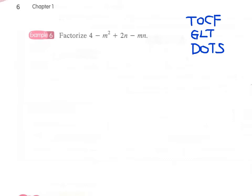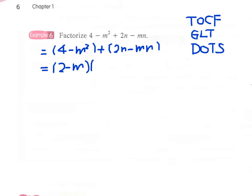In this question we can see that 4 minus m squared is a form of difference of two squares, and in 2n minus mn we can find a common factor of n. So we separate the four terms into two groups: the first two terms in one group and the third and fourth terms in the second group. In the first group we apply difference of two squares to get 2 minus m times 2 plus m. In the second group we take out the common factor n to get n times 2 minus m.